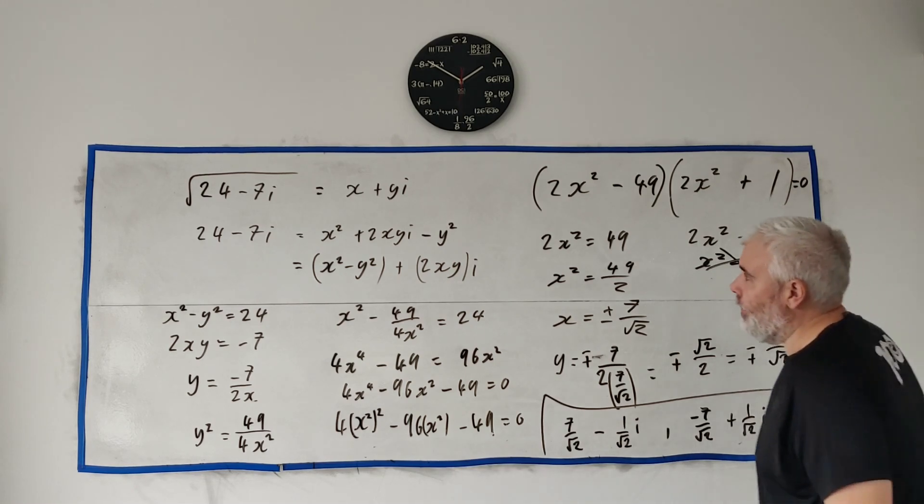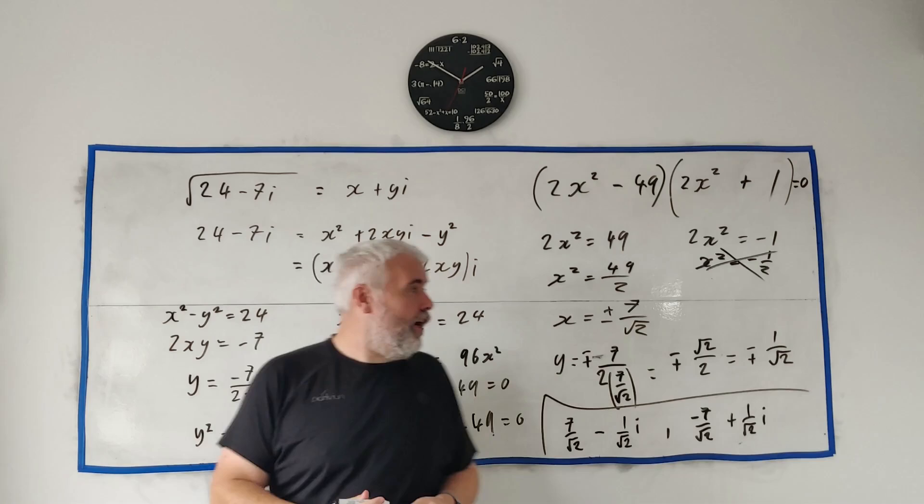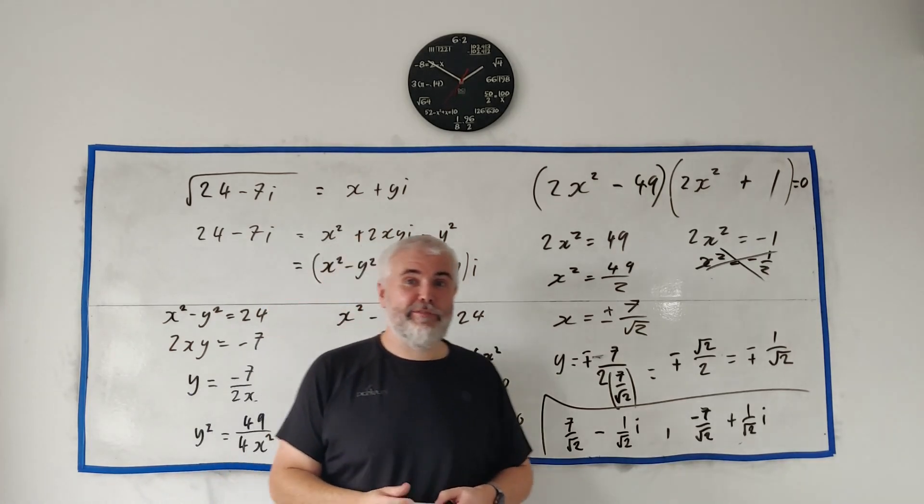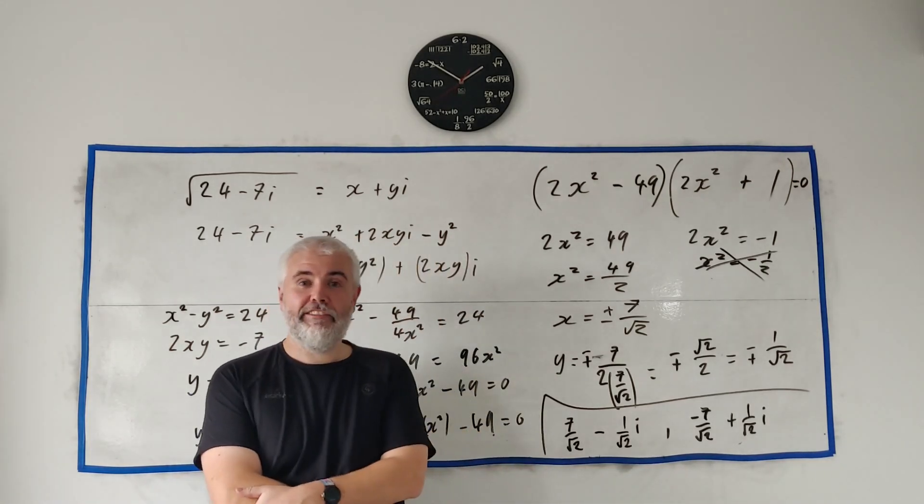The other possible answer is just the opposite: minus 7 over square root of 2 plus 1 over square root of 2 i. Okay, I hope that answered the question for you. Thank you for watching and have a great day.